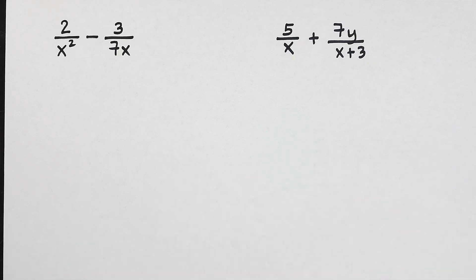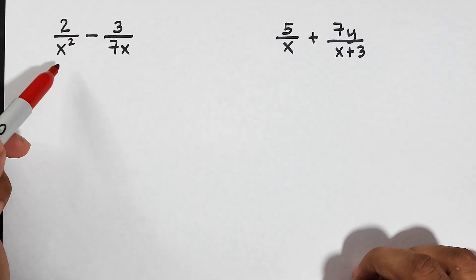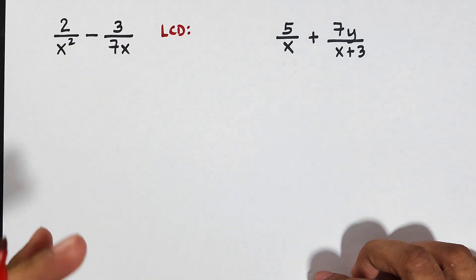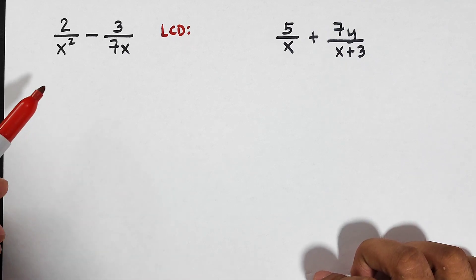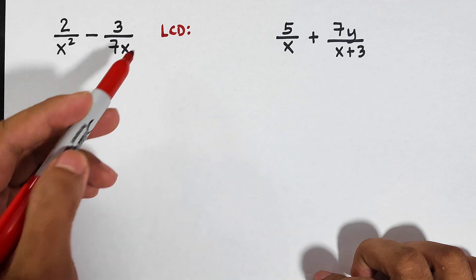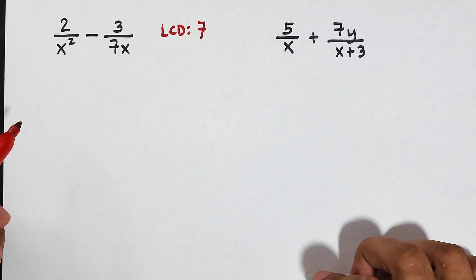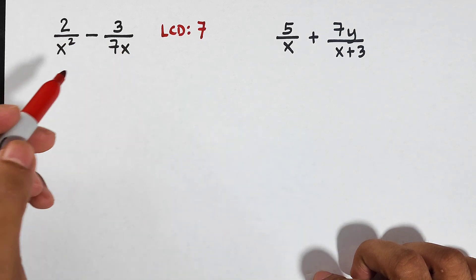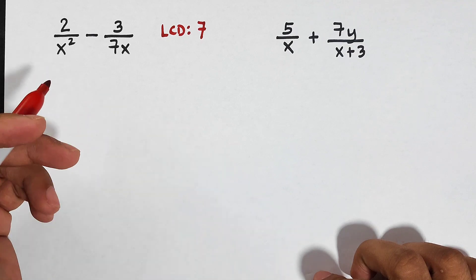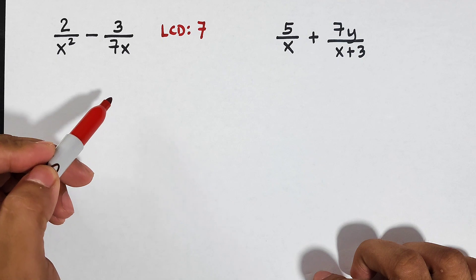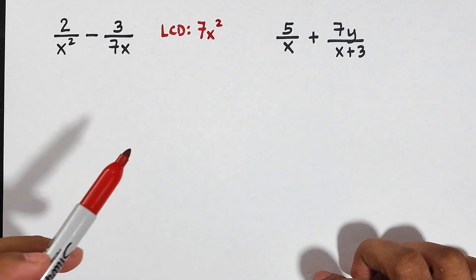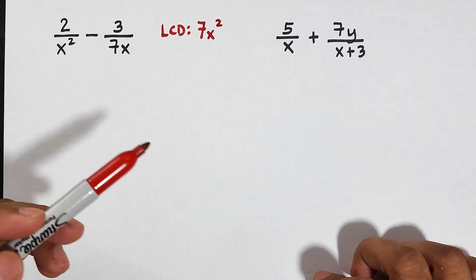The same ways on how to add or subtract fractions with different denominators apply here. For the LCD of the first example, 2 over x squared minus 3 over 7x, let's find out what the LCD is. First we focus on the numbers: the number from x squared and 7x is 7, so definitely that is part of the LCD. For the variables, we have x squared and x — if you have a monomial or a variable, choose the one with the highest exponent, which is x squared. So the LCD for this one is 7x squared.